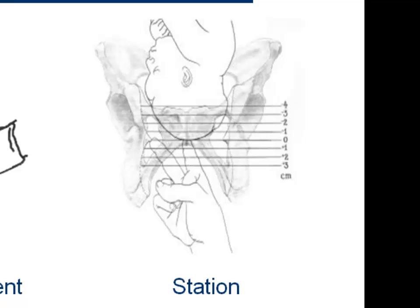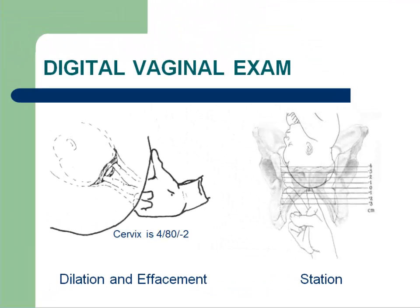Fetal station is how high or low in the pelvis the leading edge of the fetal skull is. Station ranges from minus 5 cm to plus 5 cm. Zero station means the leading edge of the fetal skull is at the level of the ischial spines. A station of minus 1 means that the fetal skull is 1 cm above the ischial spines up in the pelvis. A station of plus 1 means that the fetal skull has progressed to 1 cm past the ischial spines toward the introitus. So a cervical examination reported as 4, 80, and minus 2 means that the cervix is dilated to 4 cm with 80% effacement and a minus 2 station — that is, the leading edge of the fetal skull is 2 cm above the ischial spines.